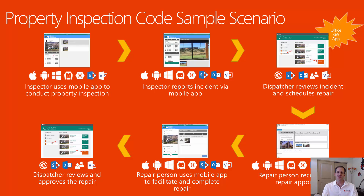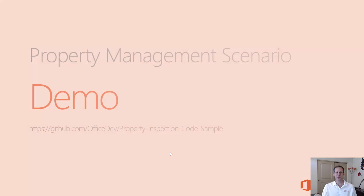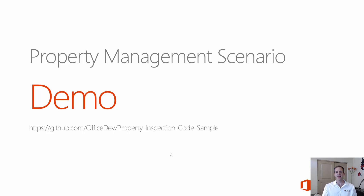Finally, the dispatcher receives notification that the incident has been repaired. They can then evaluate that repair and sign off on it. All throughout this entire process we're using workflows and tasks assigned to the different actors in play, and we're notifying the property owner that an incident has been reported and that it has been repaired. Let's jump into the demo now and actually watch this entire scenario unfold and see the Office 365 web app as well as the mobile apps in action.